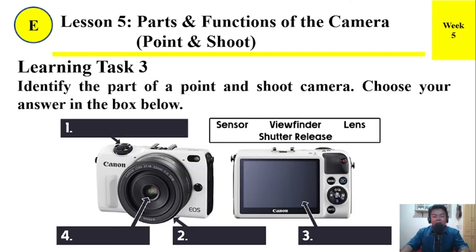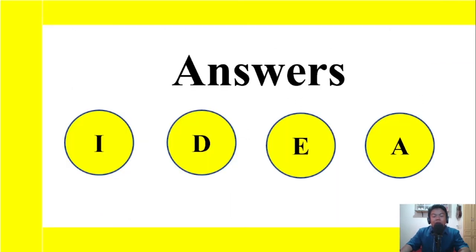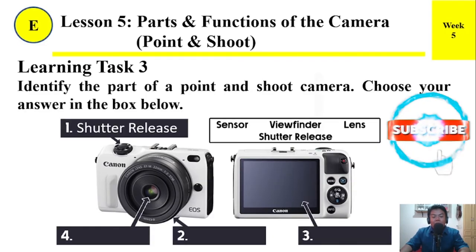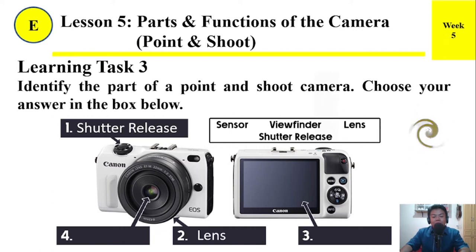Learning Task 3: Identify the part of a point and shoot camera. Choose your answer from the box below. The choices are: Sensor, Viewfinder, Lens, and Shutter release. Here are the answers: Number 1 — Shutter release. Number 2 — Lens. Number 3 — Viewfinder. Number 4 — Sensor.